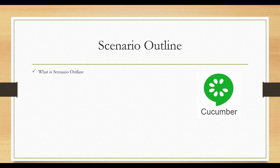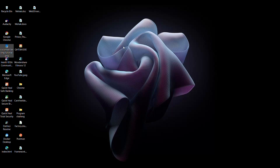In today's discussion, we are going to discuss how to club two test cases, or how to run particular test cases with different sets of data, using the Cucumber feature which is possible through Scenario Outline.